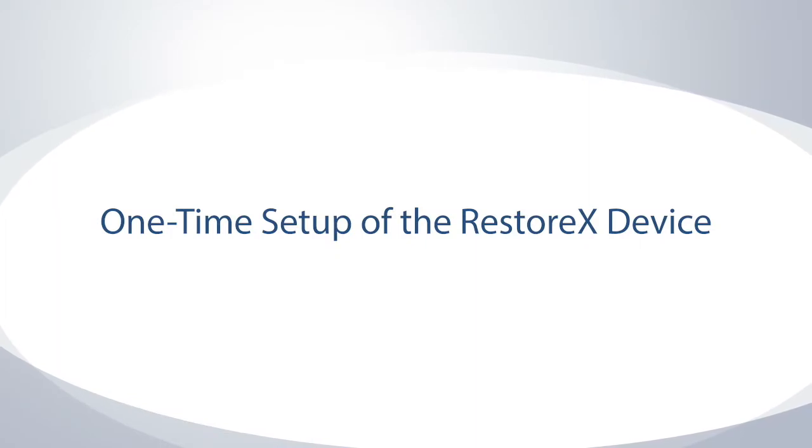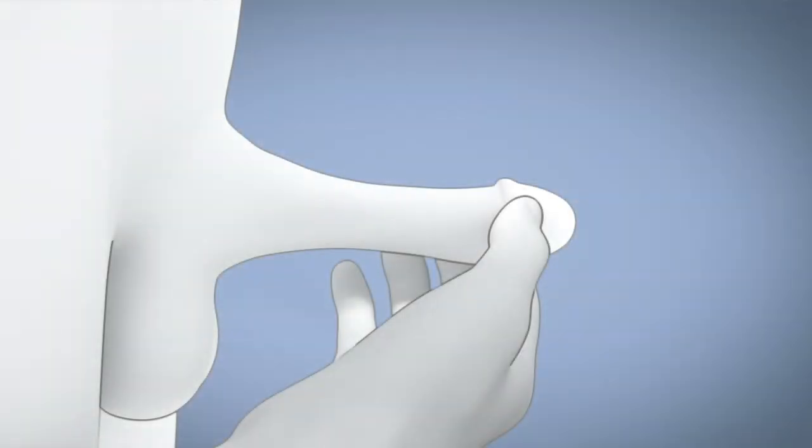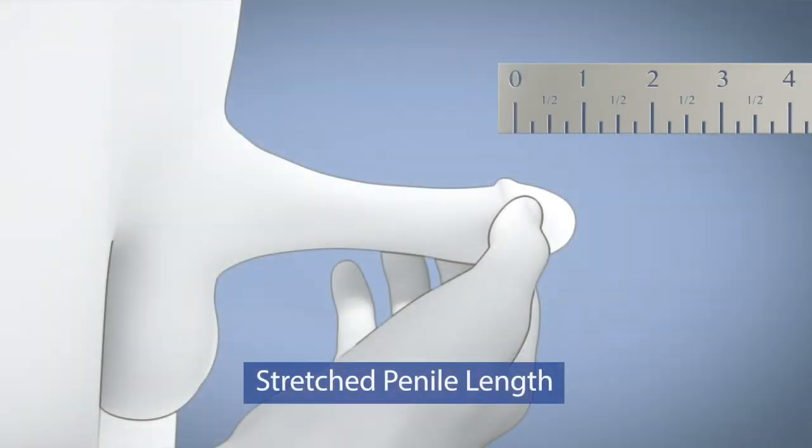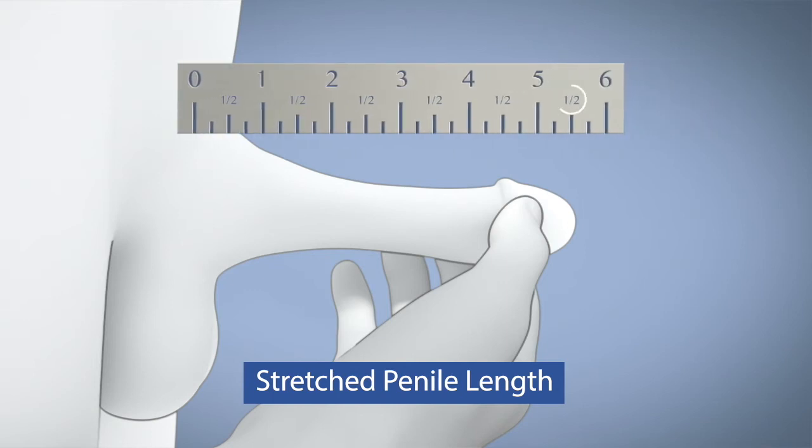Let's complete the one-time setup of the RestoreX device. To do so you need to obtain your stretched penile length in order to choose the appropriate extension rods. Ensure that the ruler measures the full length of your flaccid penis by pushing the end of the ruler into the fat pad located at the base of the penis.